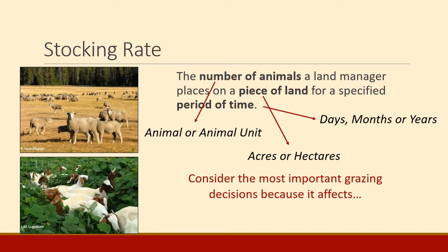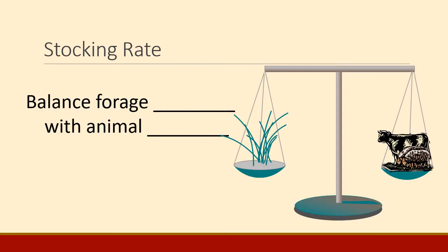Stocking rate is a really important decision we make on rangelands. The reason it's so important is that at its heart, the number of animals you put on the land affects rangeland health and economic return, animal condition, which turns into economic return on an enterprise. Stocking rate is a balance between forage supply and animal demand.